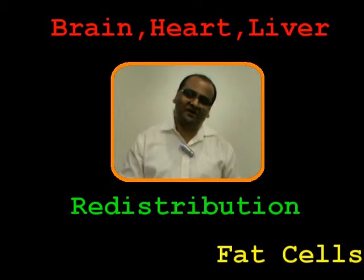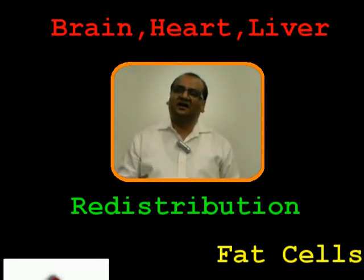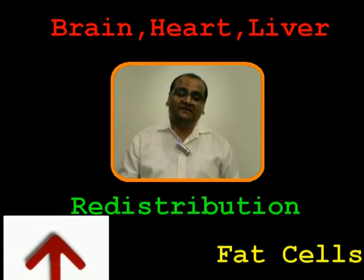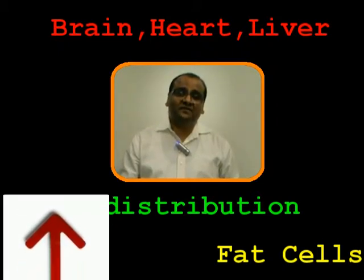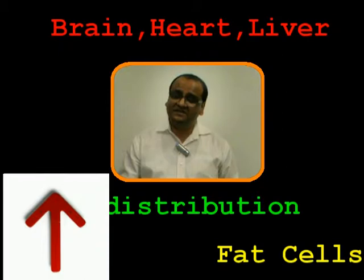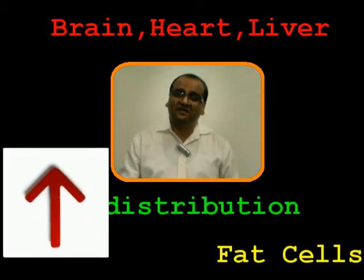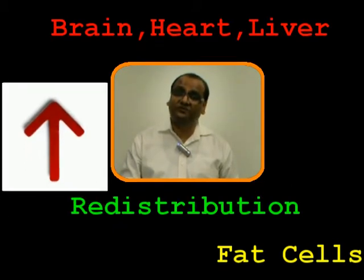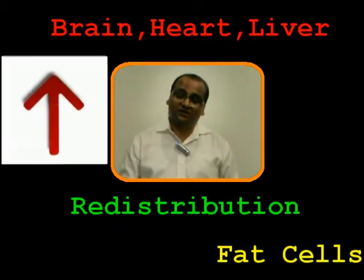But there's something else we need to talk about — redistribution of drugs. Redistribution is a slightly different phenomenon. It deals with highly lipid soluble drugs. If those highly lipid soluble drugs are given to patients, what happens is that some organs in the body are comparatively more blood-perfused compared to others. Organs like the kidneys, heart, and brain have very good blood supply.